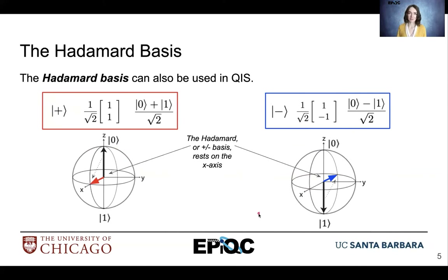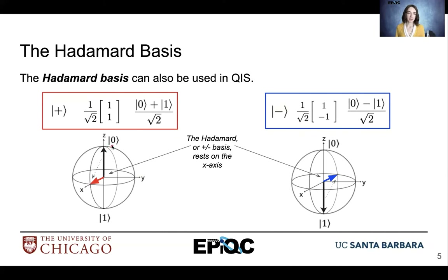We also have the Hadamard basis, which we use in quantum informatics sometimes. In terms of the computational basis, the Hadamard basis consists of the superposition state and the superposition state with phase. We take ket0 and shift it 90 degrees to put it on the x-axis to create ket plus. Then ket minus is created by taking the ket1 state and shifting it 90 degrees to place it on the x-axis as well, creating our superposition state with phase.